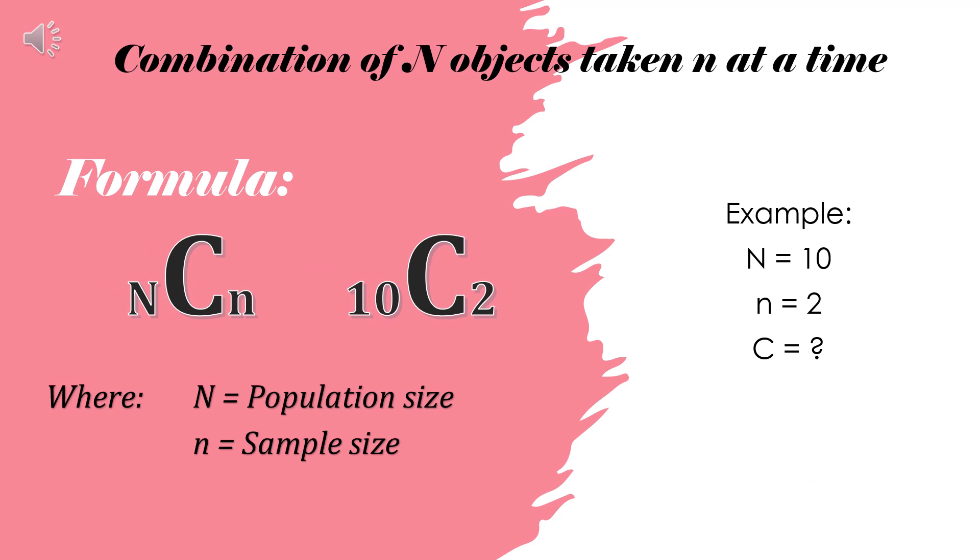Now let's have this example. We have population size of 10 and sample size of 2. This means 10C2. So again, press 10, then NCR, a big C should appear, then press 2, and then press equals. The answer is 45. There are 45 combinations that can be drawn from the given population.